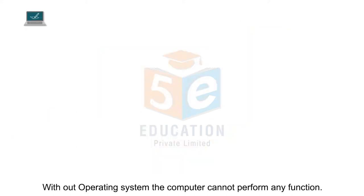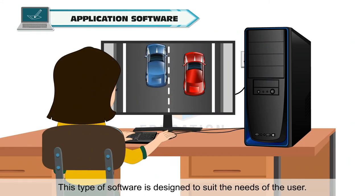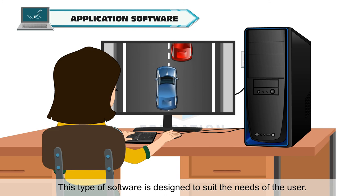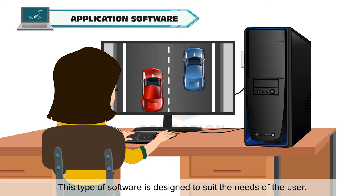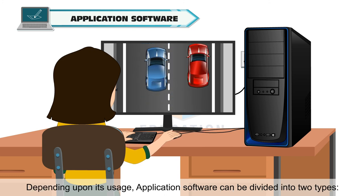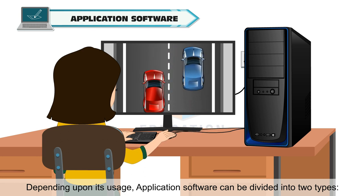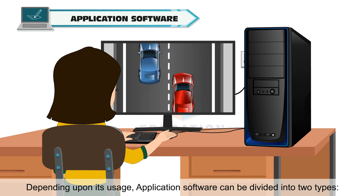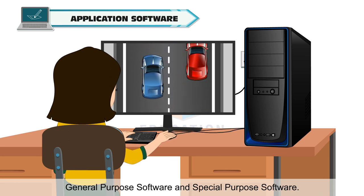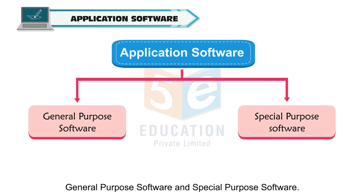Application software is designed to suit the needs of the user. Depending upon its usage, application software can be divided into two types: general purpose software and special purpose software.